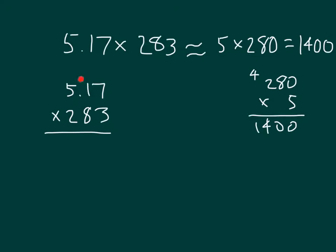So 5.17, that's 5 and 17 hundredths, or thinking about another way, that's also equal to 517 hundredths. So really, I should be just looking at 517 times 283, and then I could go ahead and convert from the hundredths back over to a decimal number there.